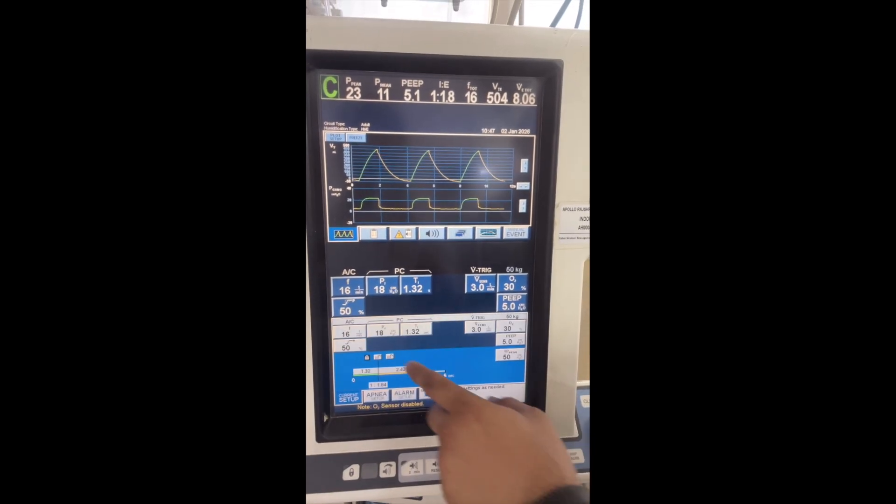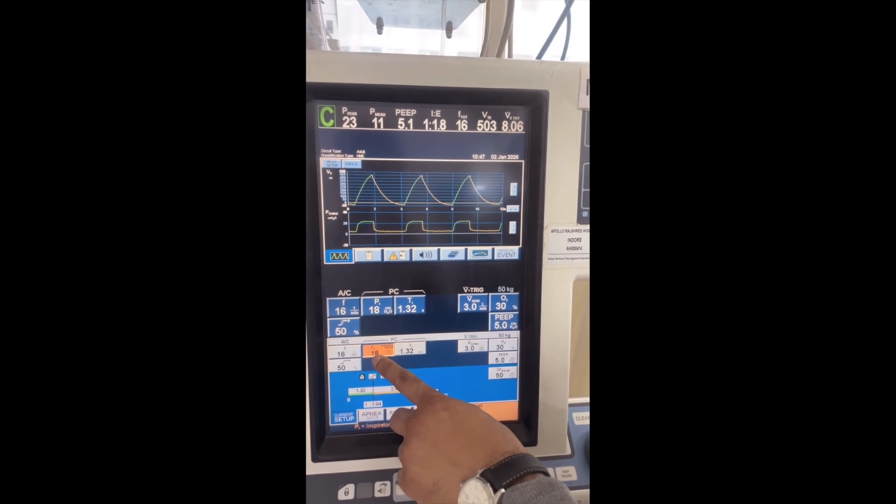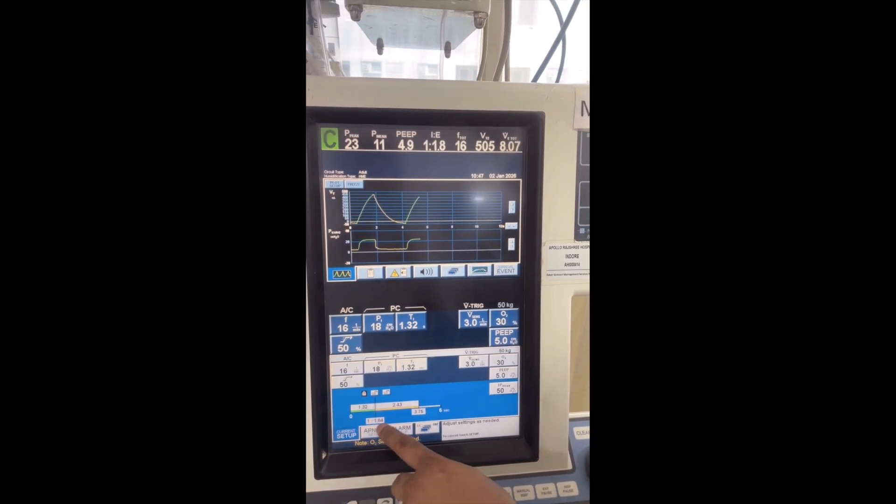Let's see here. As of now it is pressure control. In pressure control, you set the respiratory rate, the inspiratory pressure, and the I:E ratio - this much is the inspiratory time.